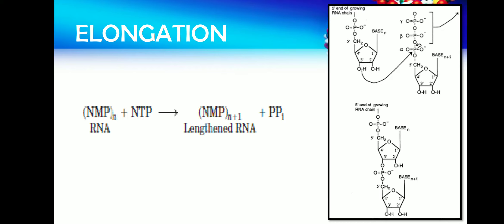Once the first nucleotide is added onto the leader sequence, the next nucleotide comes into the picture. The next nucleotide will enter into the RNA polymerase. Once it enters into the RNA polymerase, in the catalytic site of the RNA polymerase, there is a metal ion — Mg2+. Metal ion catalysis takes place where the three prime OH of the ribosugar, at the carbon three position, has an OH group.